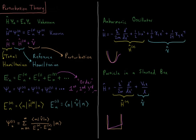Perturbation theory gives us the total energy as a sum of various terms: the zero-order (reference) energy from our known system, plus the first-order energy, plus the second-order energy, and so on to whatever order we choose. Typically we hope the perturbation theory is good enough at first or second order. Usually if we have to go to third order or beyond, it becomes difficult and we either decline to do that or choose a different reference Hamiltonian.